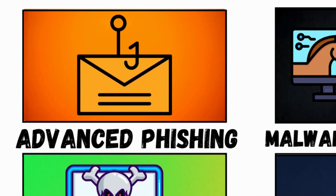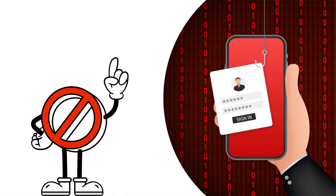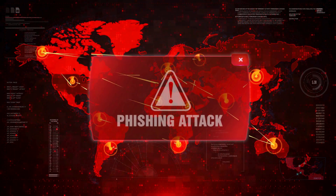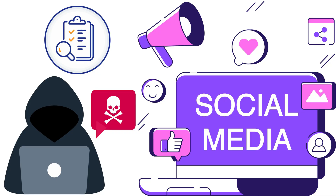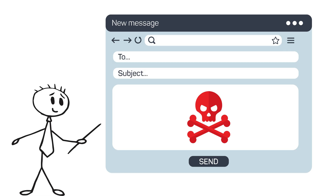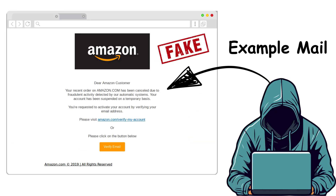Method 1: Advanced Phishing. Phishing isn't just fake emails — spear phishing targets you specifically. Hackers research your social media, then send personalized emails like: 'Hi James, your Amazon order #12345 is delayed, click the link.'